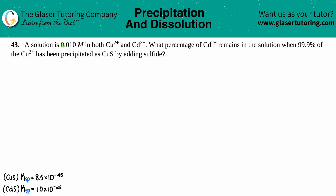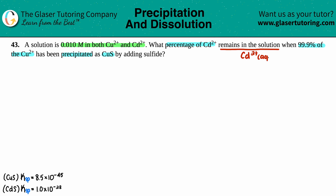Problem 43: a solution is 0.010 molarity in both copper Cu²⁺ and cadmium Cd²⁺. What percentage of the Cd²⁺ remains in solution when 99.9 percent of the Cu²⁺ has been precipitated as CuS by adding sulfide? So basically, the bulk of this question is asking: what is the percentage of Cd²⁺ remaining in solution? They tell us that 99.9 percent of the Cu²⁺ has been precipitated, so let's work on that.